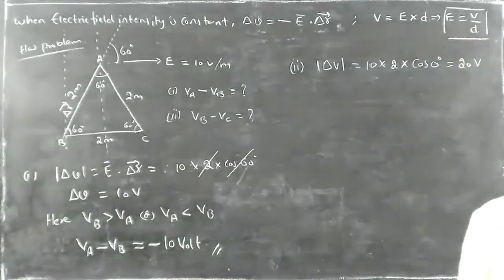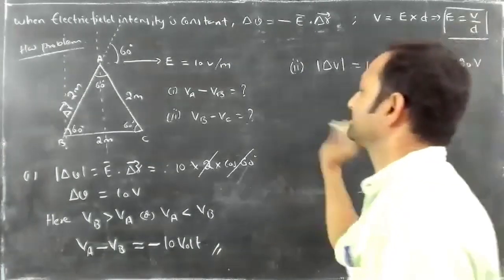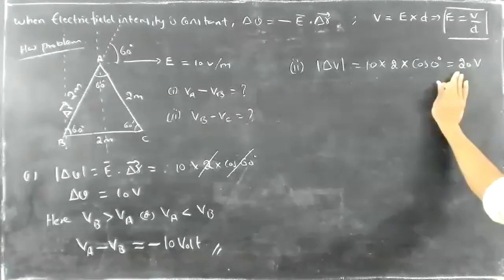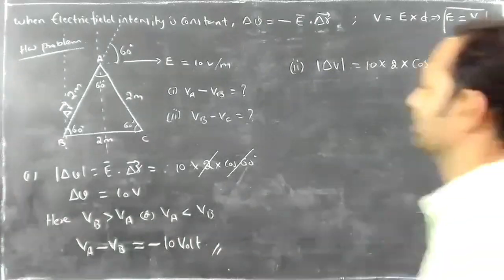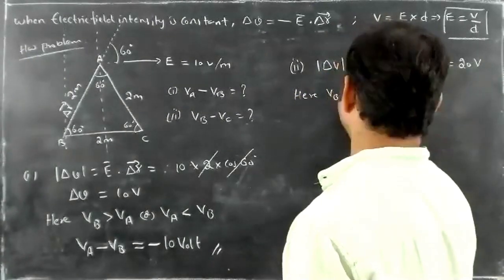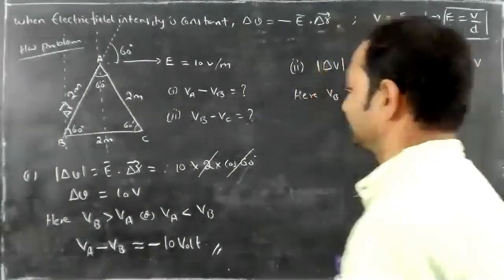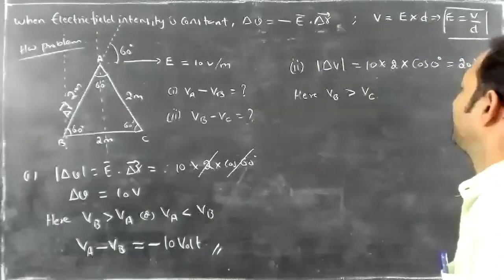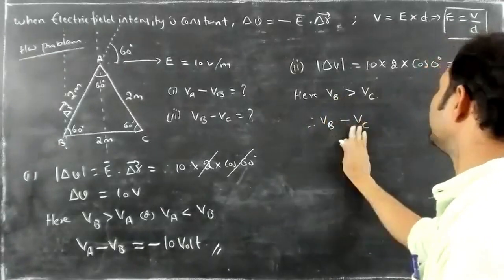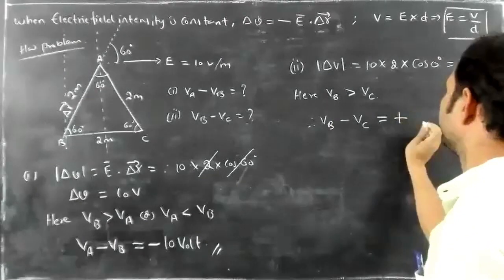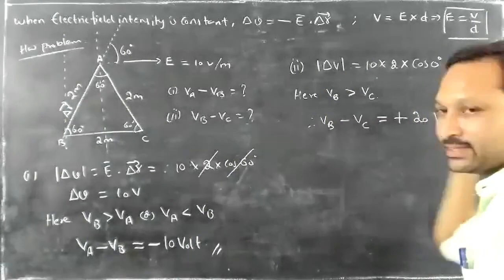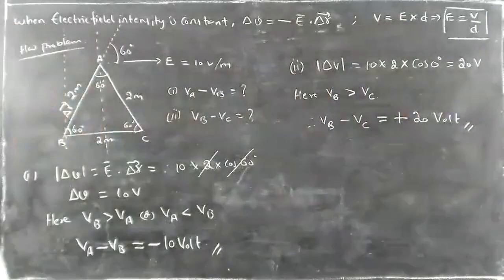And the potential difference is 20 volt. Now, 20 volt is minus or plus? Potential at B is greater than potential at C. And then VB minus VC. What is the potential difference value here? 20. So, this is the answer. Not 10, but it is 20.